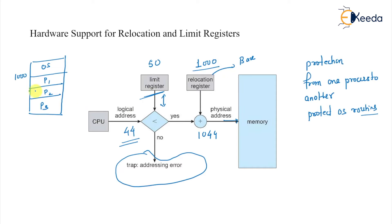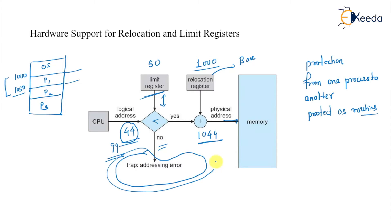For example, suppose the relocation register contains 1,40,000 and the limit register contains 74,600. Each logical address must be less than the limit register. Suppose process P1 spans addresses 1000 to 1050 and logical address 44 is generated — it is less than the limit, so access is allowed. But if 99 is generated and it exceeds the limit, a trap is directly generated. There is a base register and a limit register for each process; violating the limit generates a trap.